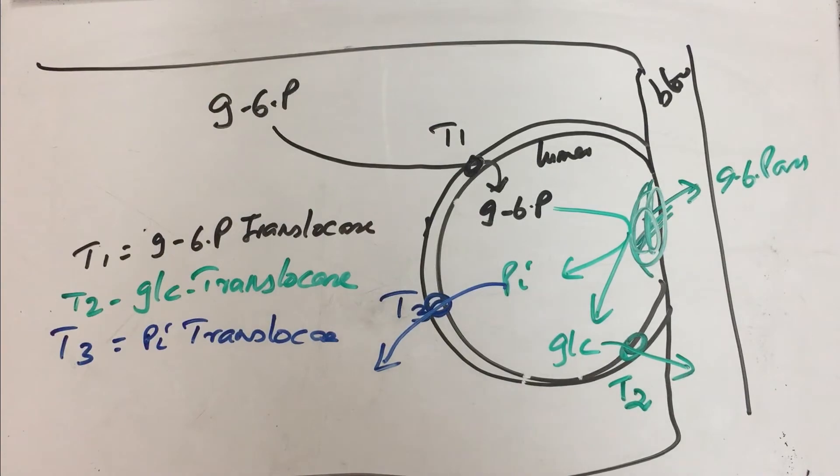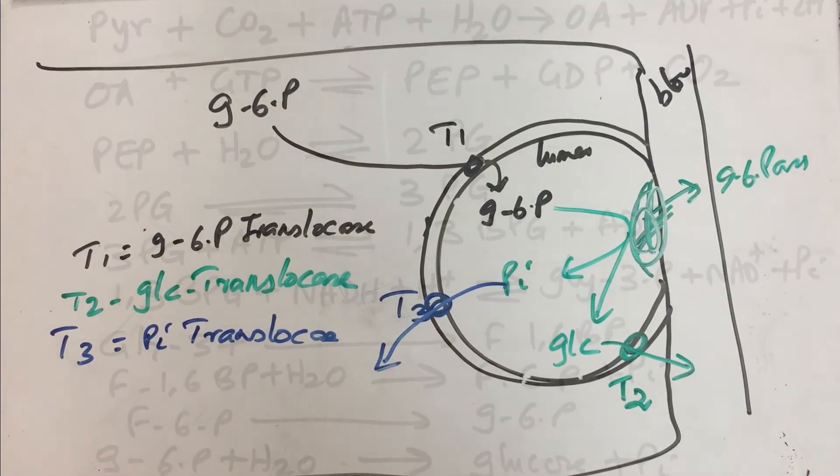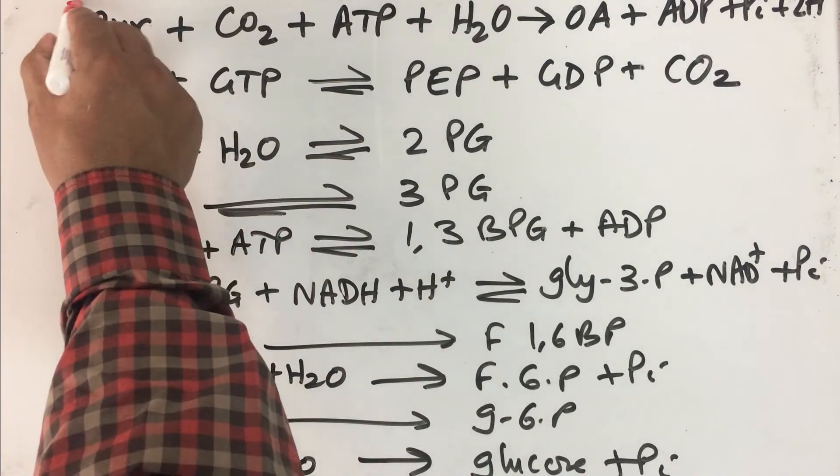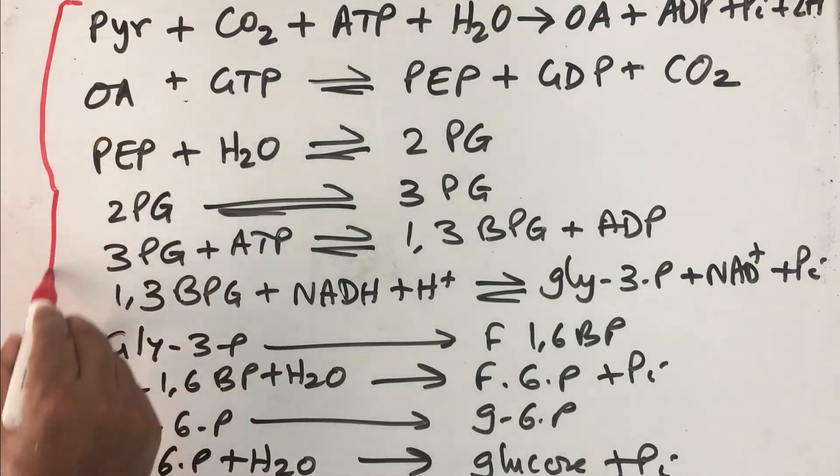Now let us look at the overall equation for gluconeogenesis. Let us write the overall equation. In the same manner by which we have learned to write stoichiometry in the case of glycolysis, I request that you go back to this. We are once again writing the stoichiometry. To make things easy, I have already written it here.